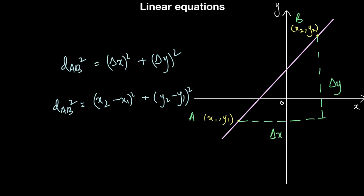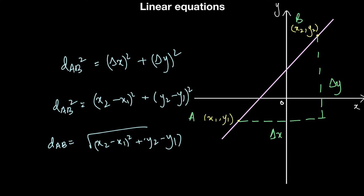To find the distance AB, all I have to do is take the square root of these values, which is the square root of (x2 minus x1) squared plus (y2 minus y1) squared. So if I have any two given points x2, y2 and x1, y1, the distance between those two points is simply this formula.